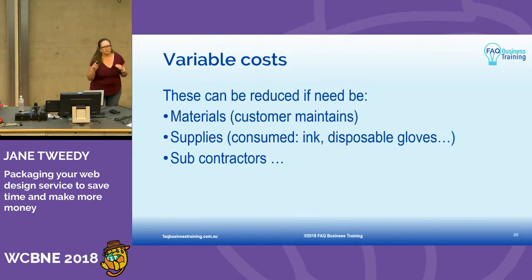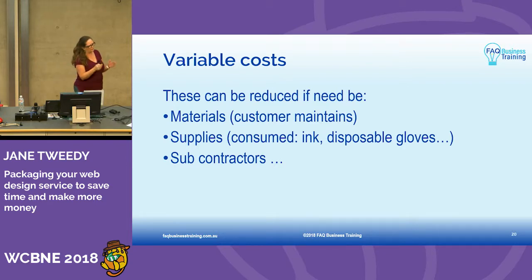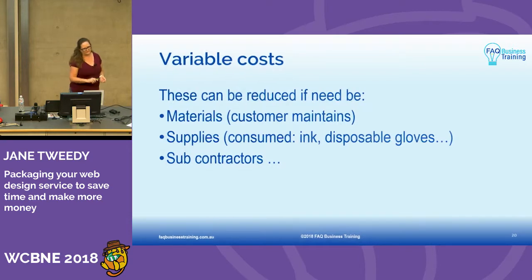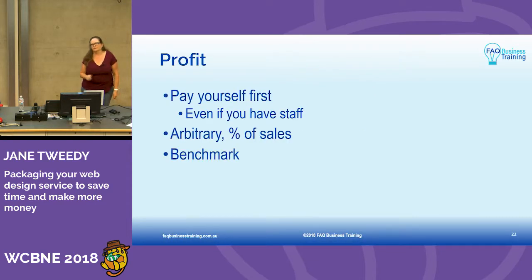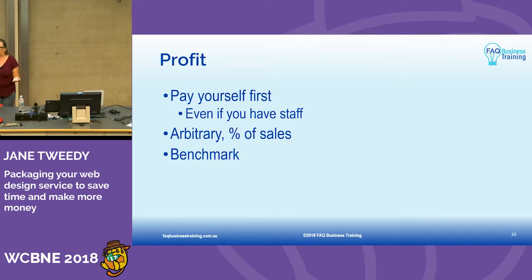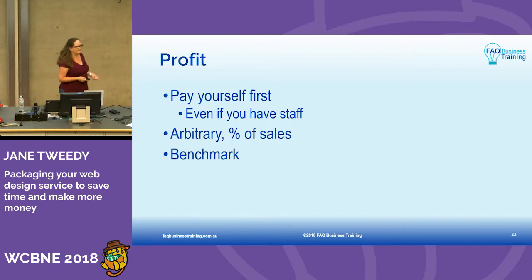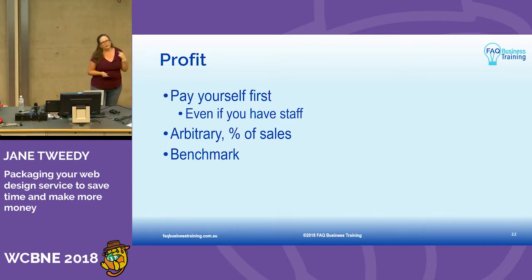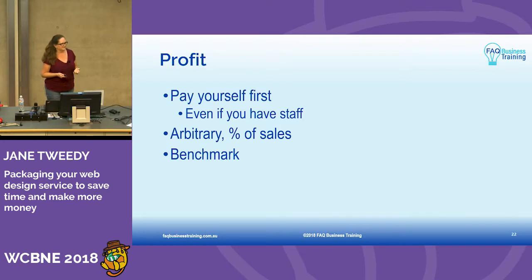Variable costs are the things directly related to the individual sale — so if you're doing a web design for a customer, how much is directly related just to that? The overheads are all the other costs of running your business. The profit in you is the most forgotten about part. You need to pay yourself as an employee if you're the web designer, but you also need to pay yourself as the business owner, as the marketer, as the admin person. Because if I outsource those roles, I have to pay for them. So why am I not paying myself to be in those roles? We have this mentality that it's not chargeable to the client — it is chargeable to the client, otherwise our business simply won't exist.